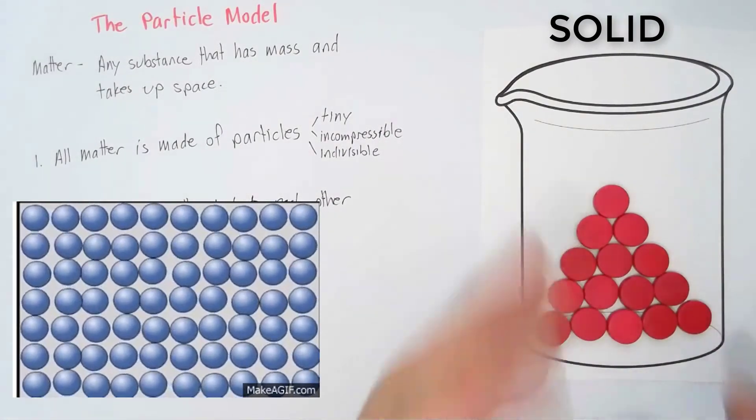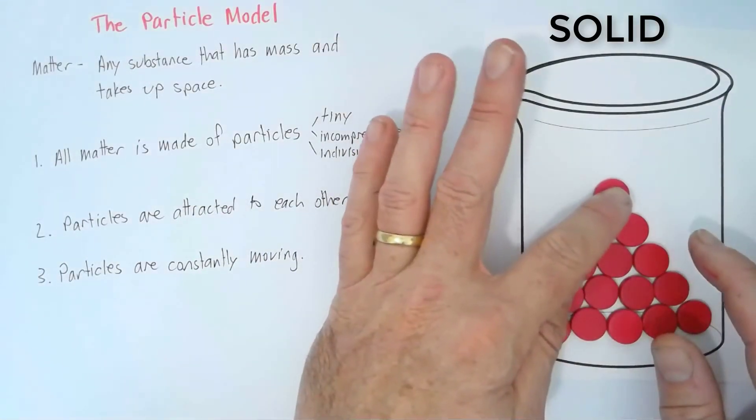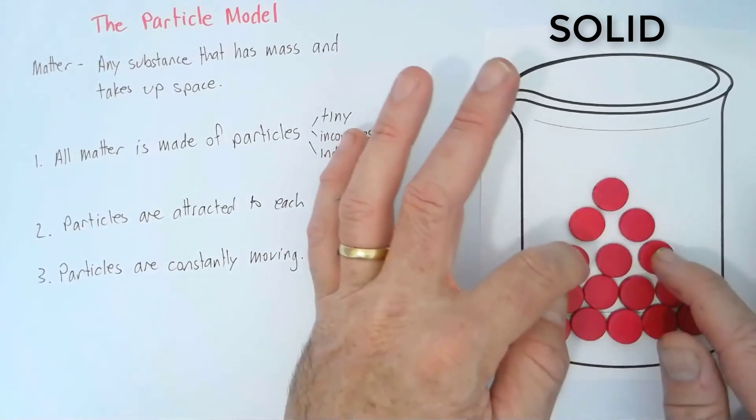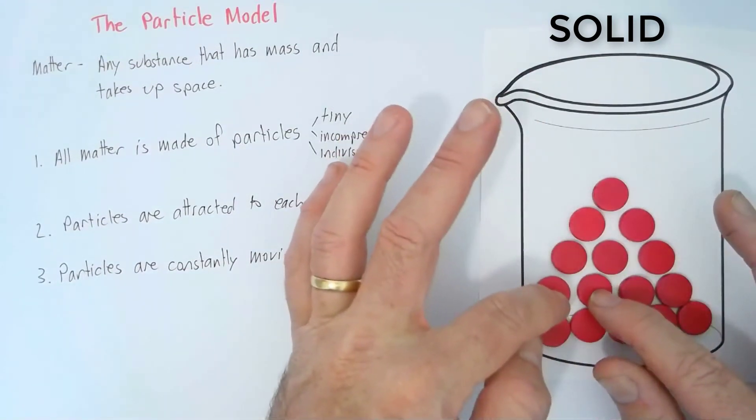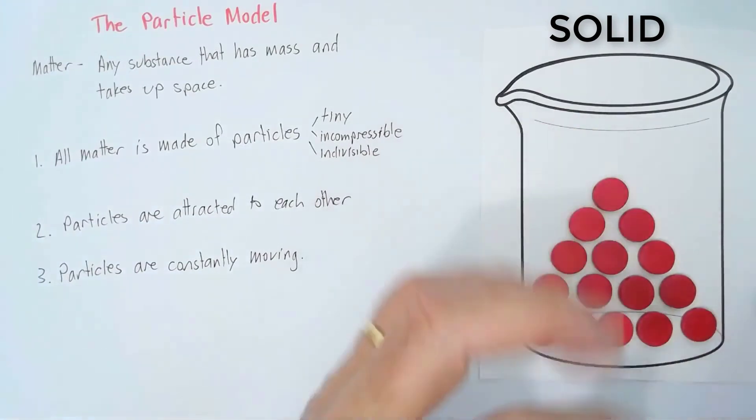If we were to add some heat to this beaker of solid, then it's going to make the particles vibrate faster. And when they're vibrating faster, they need to take up a little bit more room. This is why matter expands when it's heated.